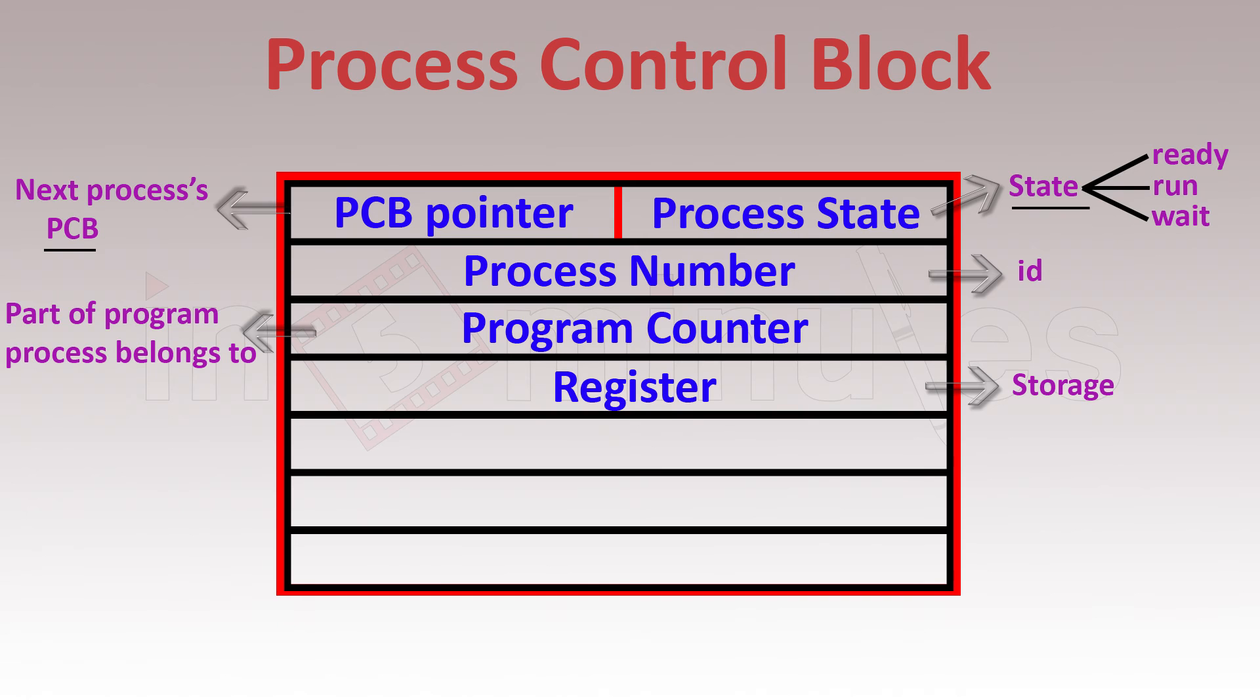The next thing is the memory limit. In the entire RAM, where exactly does your process stand? So the memory limit would give you the base as well as the limit. Base will give you the start point and limit will give you the end point. So together they provide where exactly in memory your process is being stored. By referring to memory this time, I am referring to the main memory or the RAM.